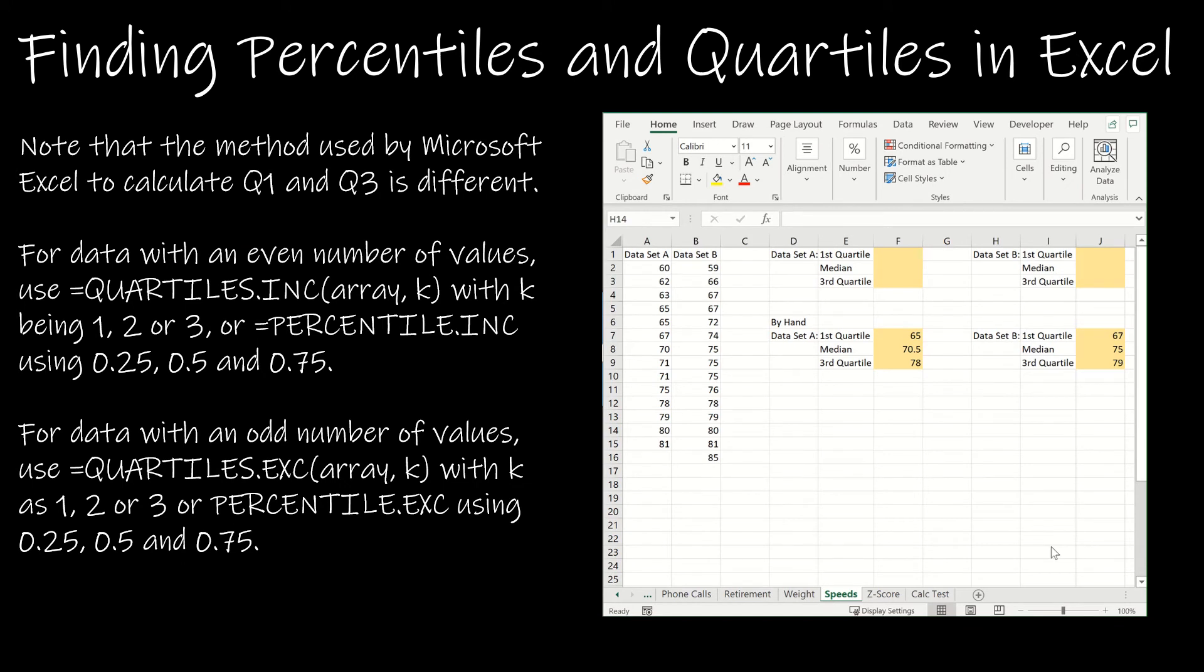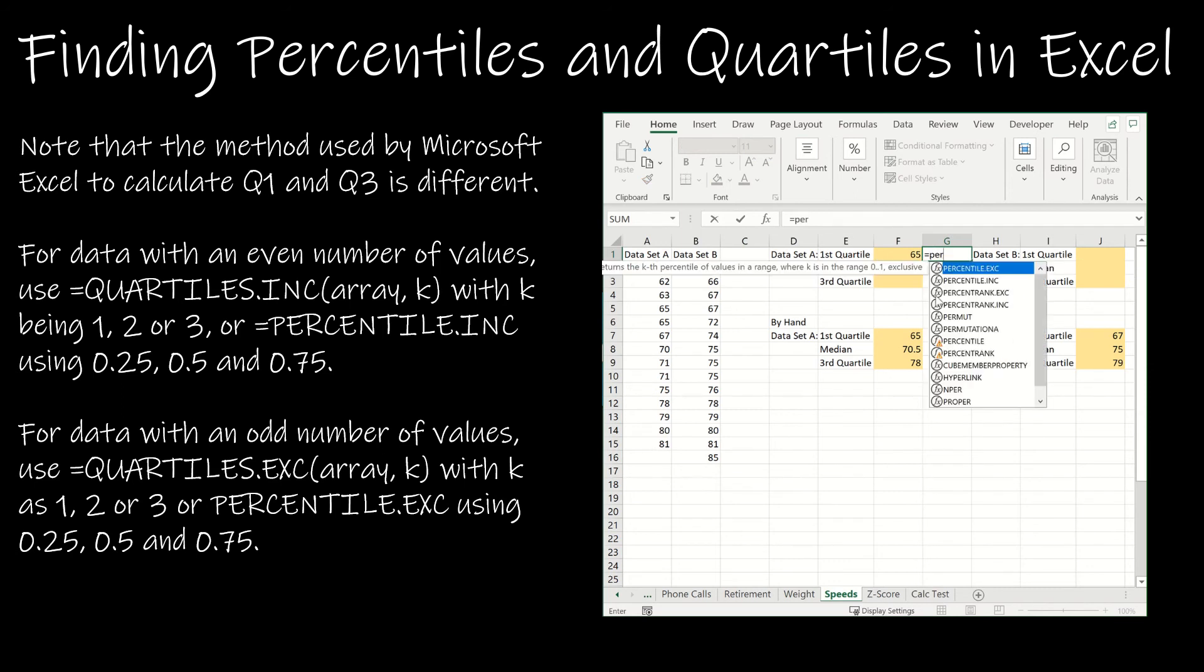We're now going to use Excel to find the quartiles, and I'm going to point out how things can be a little bit different with Excel. If I'm using Excel, it's very important that I know whether it's an even or odd number of values. Here, notice I've got 2 to 15, which is an even number of values, 14 values. So I'm going to choose the inclusive. I can either use QUARTILE.INC, choose the array, and then choose the quartile 0, 1, 2, 3, or 4. Quartile 0 is the minimum and quartile 4 is the maximum.